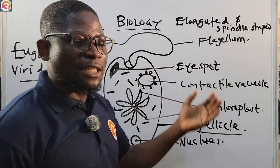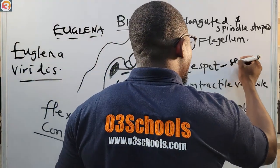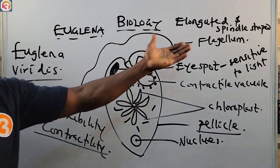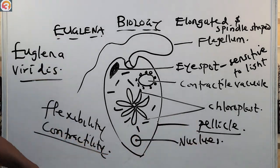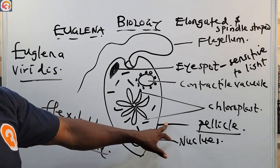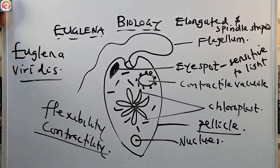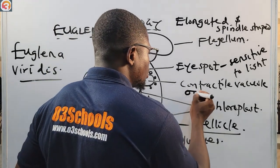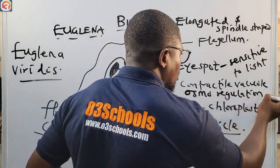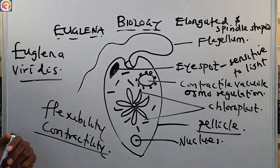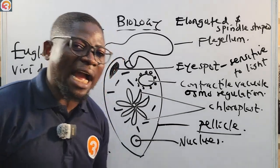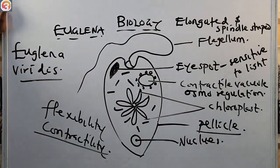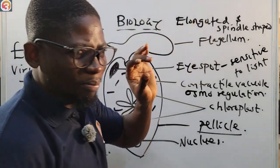The Euglena also has an eye spot, which is sensitive to light. It also has a contractile vacuole, which is used for osmoregulation — that is, for the removal of excess water from its body and for maintaining internal water balance.